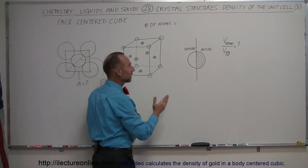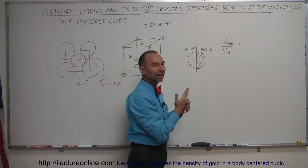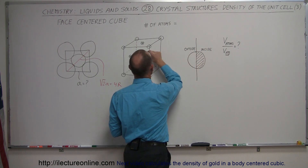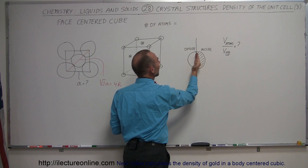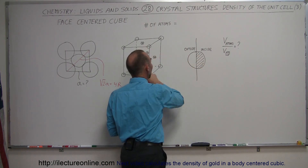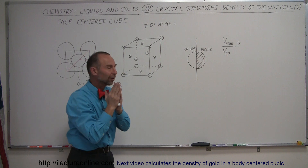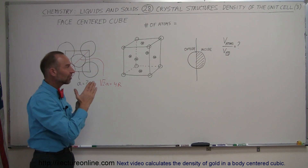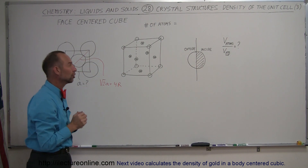Another way of looking at it: if this is one of the sides and we're looking at a cross-sectional view, half of each face atom will be inside the cube and half will be outside the cube. So the six atoms positioned on each of the six faces each have half sticking inside and half sticking outside the cube.